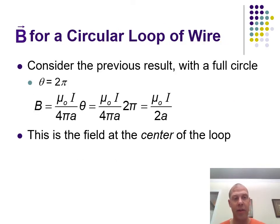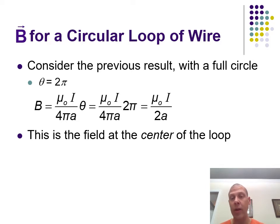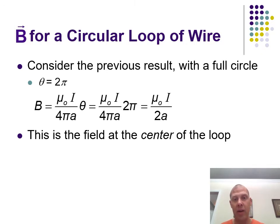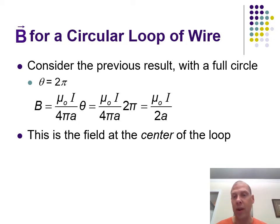The magnetic field at the center of a full loop of wire works similarly — you just use whatever the angle is in radians. A full circle is 2π radians, so you multiply by 2π, which cancels with the 4π, and you end up with 2a in the denominator. So the formula becomes B = μ₀I / (2a), where a is the distance from the wire center and I is the current.